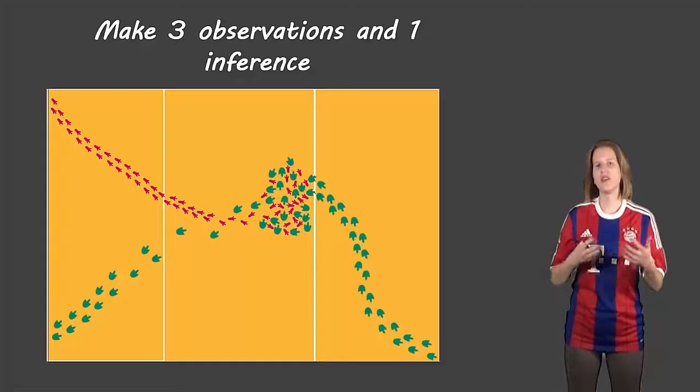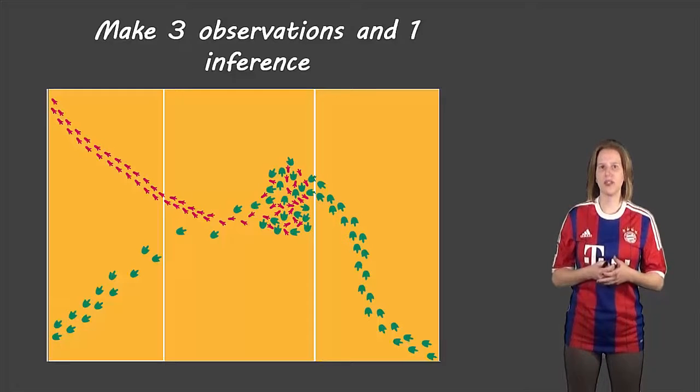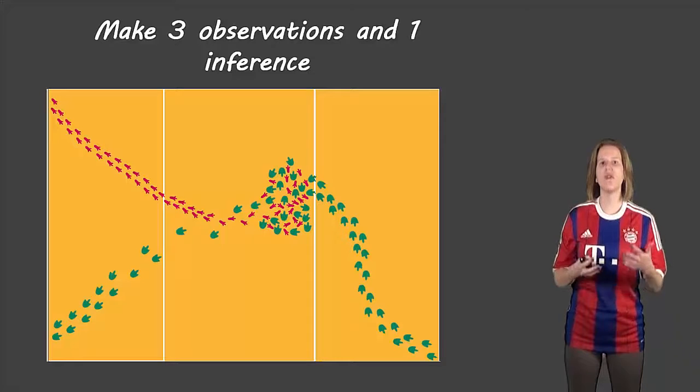However, your inferences, what you think is happening, probably did change as you went through. That's one of the reasons we don't include them in an observation section. Observation section is just for stuff that you know is happening.